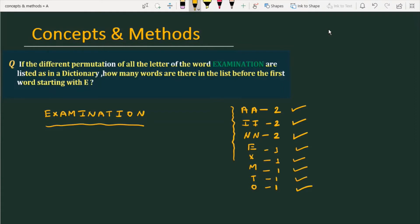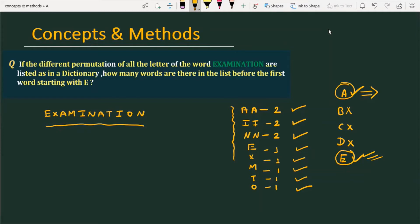In the dictionary, the general pattern is that we list all words starting with A first, then B, then C, and so on. This is a special case because B, C, and D are not present in EXAMINATION. Yes, E is present and A is also present. So all words starting with A will be made first, and then we will start words beginning with E. The question asks: before the first word starting with E, how many words are made starting with A?